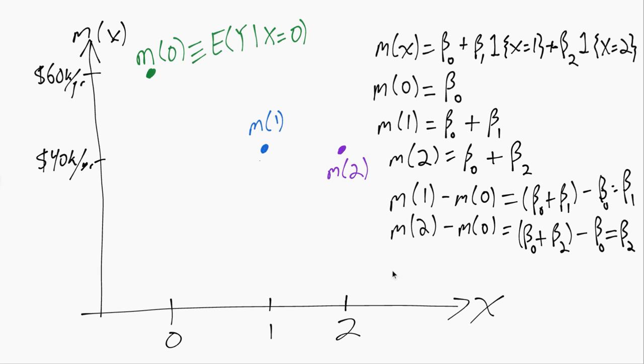We can interpret these beta parameters or coefficients in terms of the underlying conditional mean values in this case. The last point is you can see now in our conditional mean function we have these three values and now we have these three parameters. So we have enough flexibility, enough parameters in our model to capture whatever functional form the true CMF has.